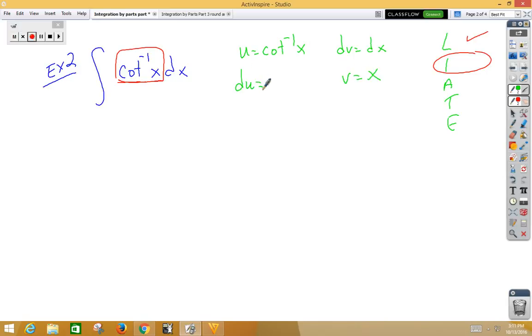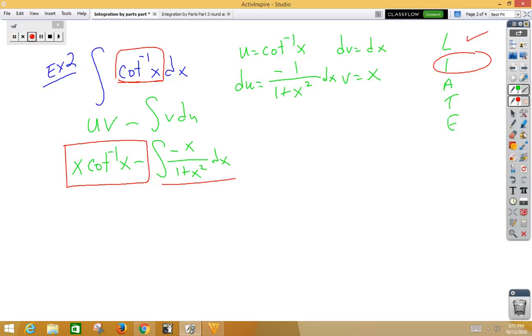Integrate inverse cotangent negative 1 over 1 plus x squared dx. Plugging in our formula, u times v would be x inverse cotangent x minus, we've got the integral of v du, or voodoo, so minus negative x over 1 plus x squared dx. Again, this front part is finished, so we can ignore that for now and just do the back side. Simple u sub, u is 1 plus x squared.